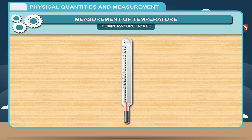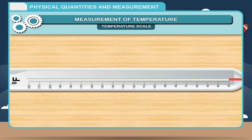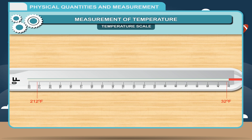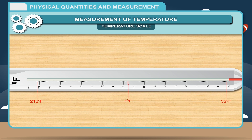On the Fahrenheit scale, the lower and upper fixed points are 32 degree Fahrenheit and 212 degree Fahrenheit respectively. The distance between these two points is divided into 180 equal parts, and each division is equal to 1 degree Fahrenheit.